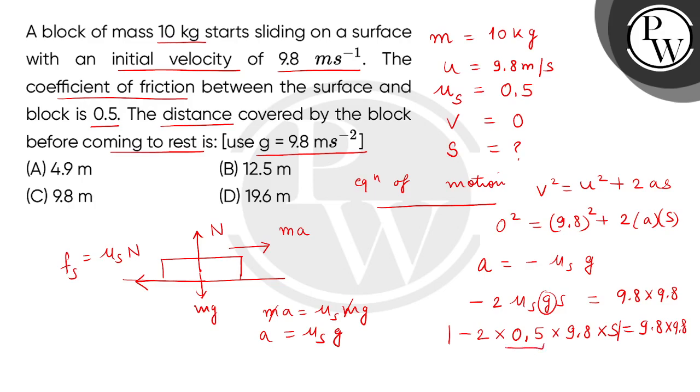So we get 1 times 9.8 times S equals 9.8 times 9.8. The 9.8 cancels, so S equals 9.8 meter.